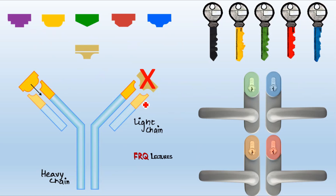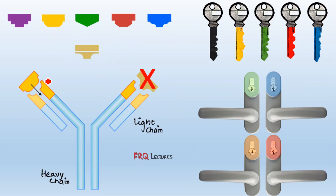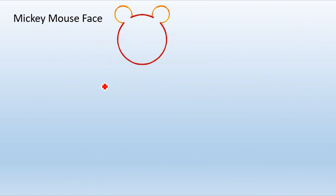We need to familiarize ourselves with two terms that sound alike and share a common suffix. The portion of the antigen that is unique and has a specific pattern is known as the epitope. The portion of the antibody where the antigen fits — the antigen-binding site — is known as the paratope. So we have the concept of epitope and paratope.